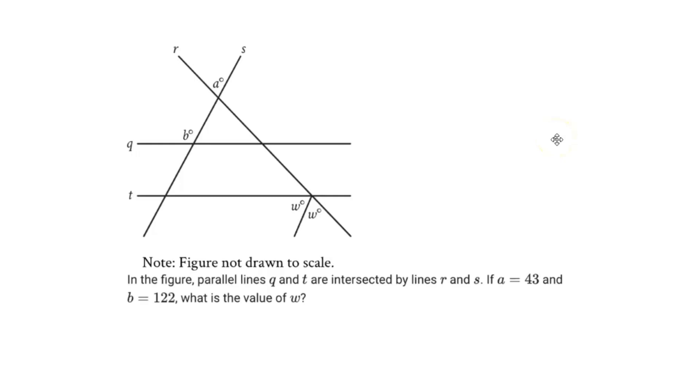Alright, so we've got a tricky geometry lines-angles problem. In the figure, parallel lines g and t are intersected by lines r and s. If a equals 43 degrees and b equals 122 degrees, what is the value of w?